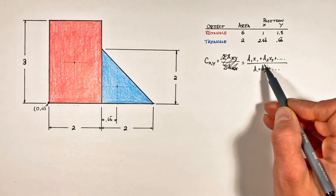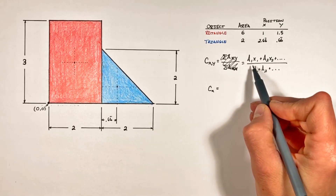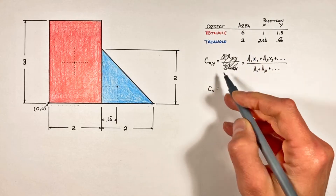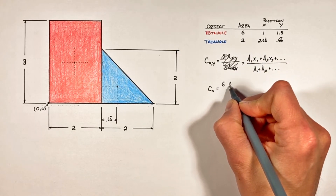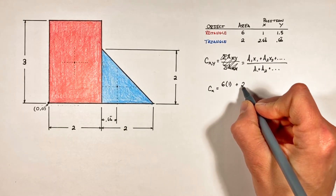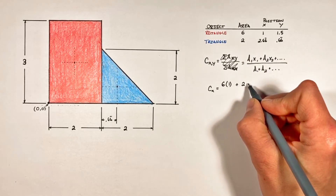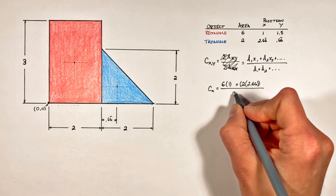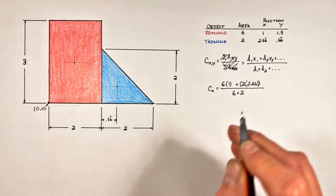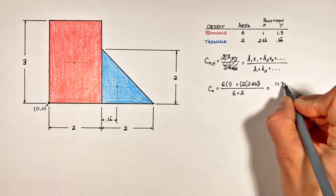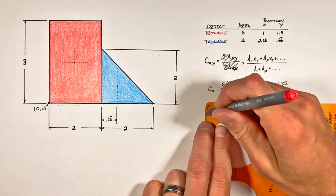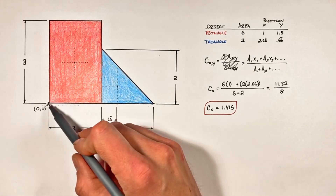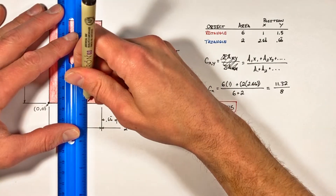Plugging in our values from the table: for the rectangle we have an area of 6 at a horizontal position of 1, plus the area of the triangle — that's 2 — multiplied by its horizontal position of 2.66. In the denominator we have the area of the rectangle plus the area of the triangle. We find horizontally the center of area of this assembly is 1.415 from our origin, so the center of area lies along this vertical line.